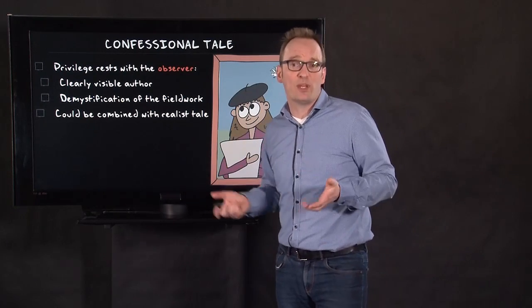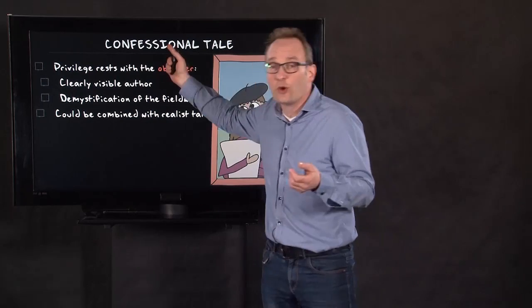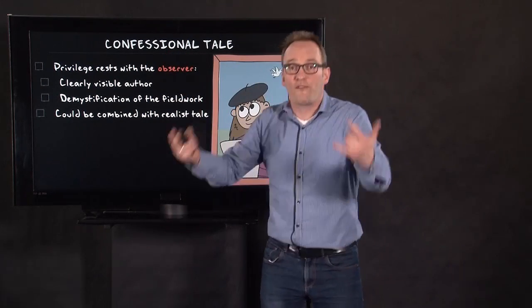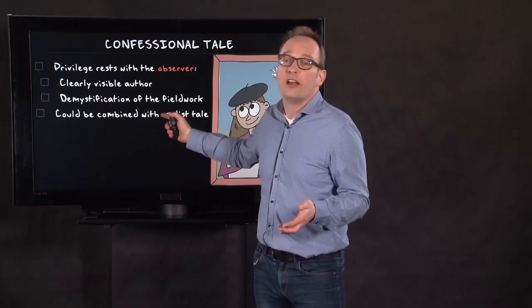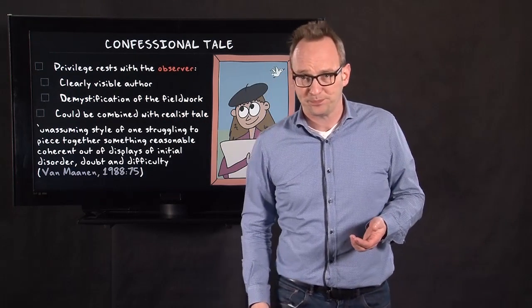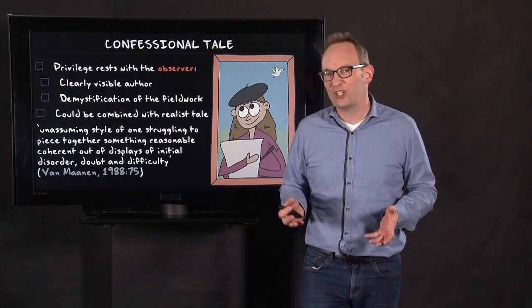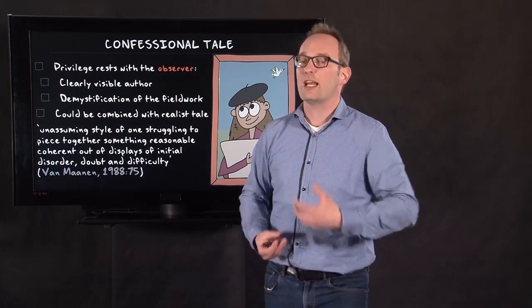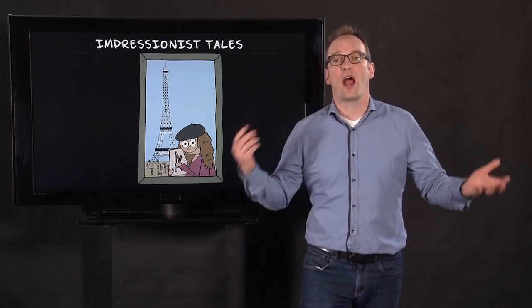And it can be combined with the realist tale, but it does not need to be. So auto-ethnographies are focusing a lot on the confessional aspect and using the confessional aspect also to describe something. But there are also confessional tales that are pretty much combined with the realist tale. Van Maanen says this about it: it's an unassuming style of one struggling to piece together something reasonably coherent out of displays of initial disorder, doubt, and difficulty. Disorder, doubt, and difficulty - and this is exactly what happens in this confessional tale. Beautiful writing about someone's own feelings, much accounting.